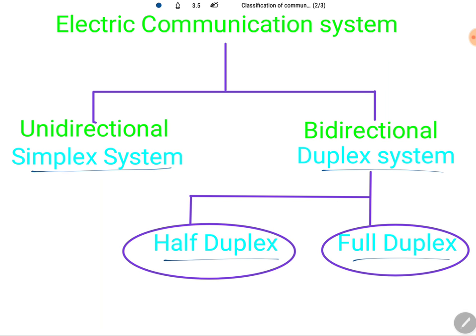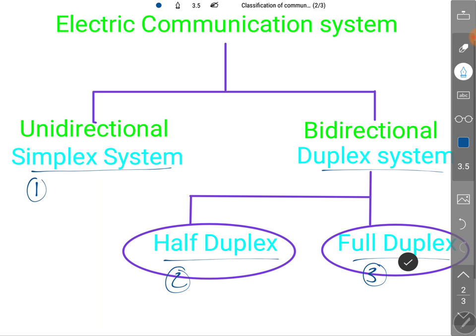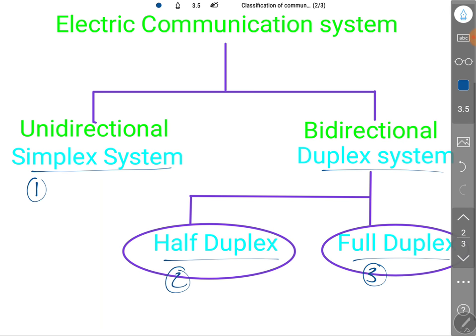So basically there are three types of communication systems: simplex system, half duplex system, and full duplex system. Let us understand all three categories.